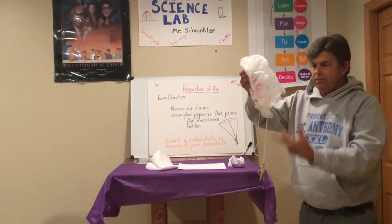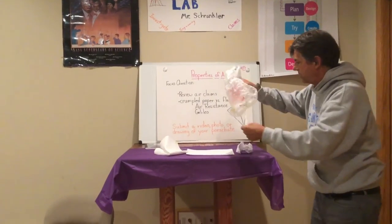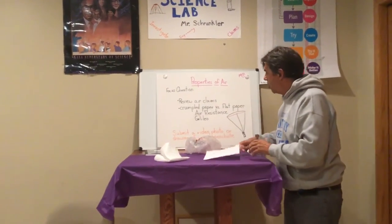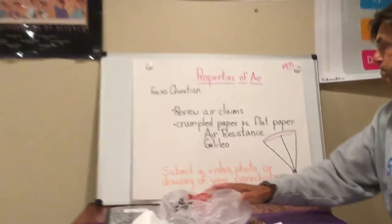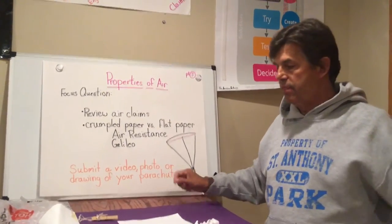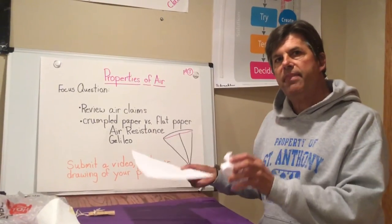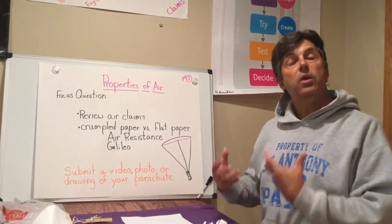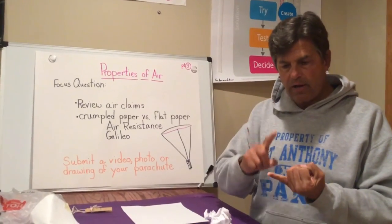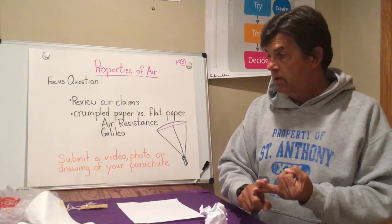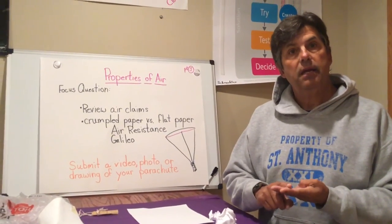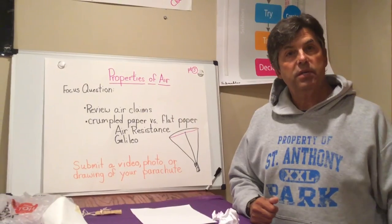If you're not able to have materials to construct a parachute or recyclable materials, I understand, but I bet you all have a couple pieces of paper that you could demonstrate it that way. Your submission this week is going to be to submit a video, photo, or a drawing of your parachute — or you could do the same with the paper — just submit something relating to air resistance to demonstrate this property of air. In summary, we've taken a look at how air can move things, how air has mass, how air takes up space, and today, air resistance. Have a great rest of your week, and I look forward to seeing your submissions.